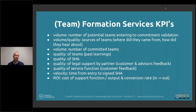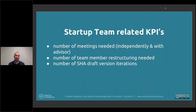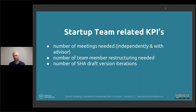These measures are all output-oriented, result-oriented, and process-oriented. When a startup team is working, you can ask how many times they need to meet on average with a mentor or advisor, and how many discussions they need to have before they are ready to commit to a shareholder agreement and complete it.